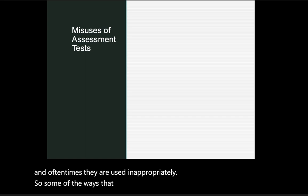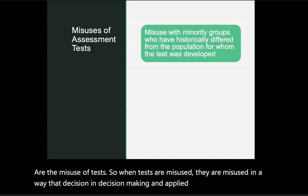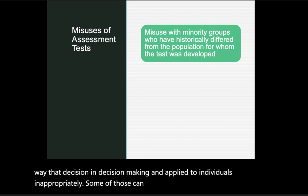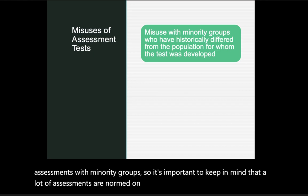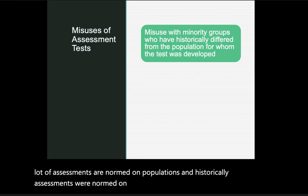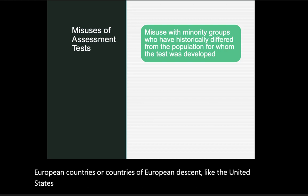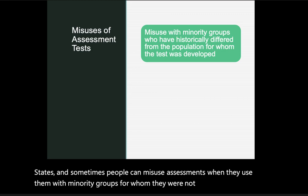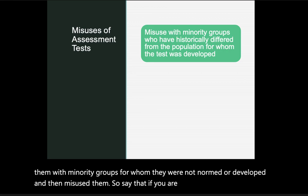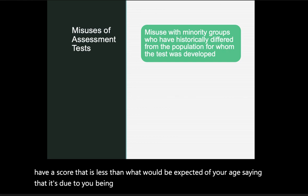Some ways tests are misused include being applied to individuals inappropriately in decision-making. One key concern is misuse with minority groups. Many assessments are normed on populations — and historically, assessments were normed on white individuals in European or European-descended countries like the United States. Misuse occurs when assessments are applied to minority groups for whom they were not normed, such as attributing a lower-than-expected score to someone's minority status. That is a misuse of assessment.